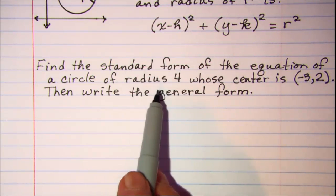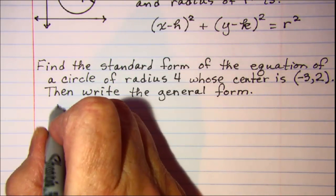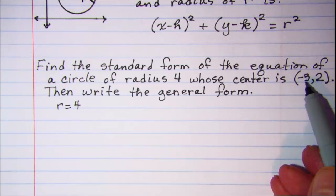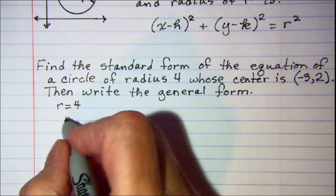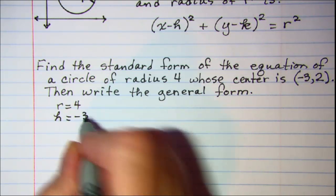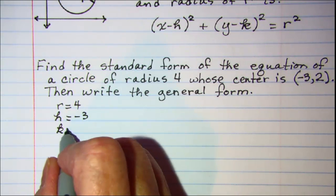So we're told that our radius is 4, so r = 4, and we're told that the center of our circle is (-3,2). So that tells us that h = -3 and k = 2.